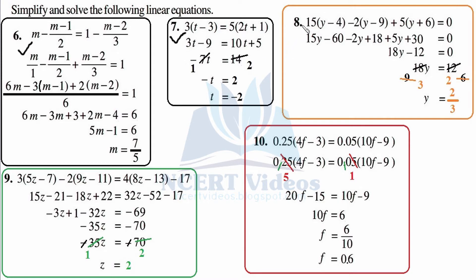Question number 8: 15 is getting multiplied with (y minus 4), minus 2 is getting multiplied with (y minus 9), plus 5 is getting multiplied with (y plus 6), equal to 0. First step: open the brackets. 15 times y is 15y, minus 15 times 4 is 60; minus 2 times y is minus 2y; minus times minus is plus, so plus 2 times 9 is 18; plus 5 times y is 5y; plus 5 times 6 is 30, equal to 0. Now solving: 15y minus 2y is 13y, and 13y plus 5y is 18y.